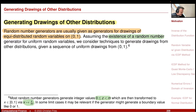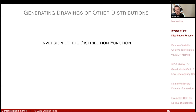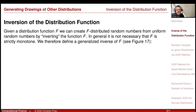I assume the existence of a random number generator for uniform random variables, and the question is: how do we generate a sequence representing drawings of other distributions from this uniform sequence? A very prominent method — and perhaps the best, if you have an ICDF available — is the inversion of the distribution function. If you have the inverse of F, you can create F-distributed random numbers by applying this inverse to the uniform sequence.